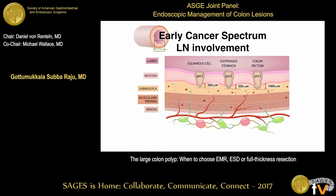The colon actually lends itself for endoscopic resection, unlike esophagus — whether squamous cell cancer or adenocarcinoma — or stomach, because it gives you a little more depth of penetration. For squamous cell cancer, if it goes into the superficial submucosa, there is higher risk for lymphatic spread. Next comes gastric cancer, then colon cancer, in terms of frequency of lymph node involvement in lesions going into the submucosa — whether upper, middle, or lower one-third — and that lymphatic involvement changes.